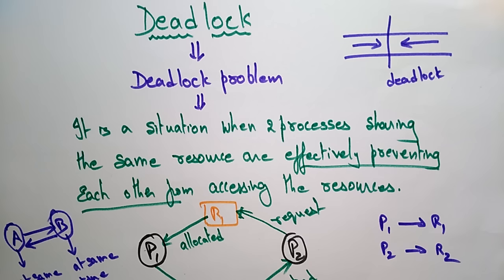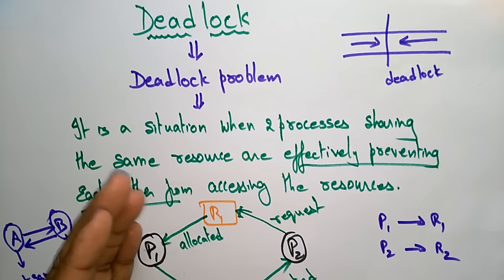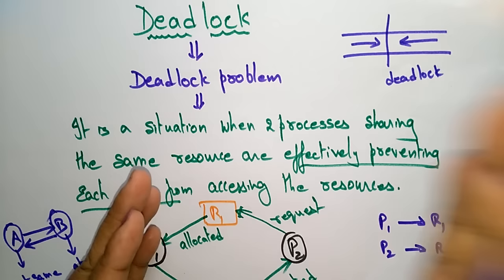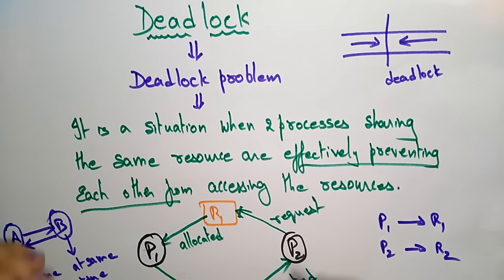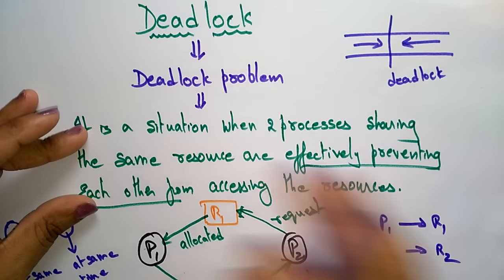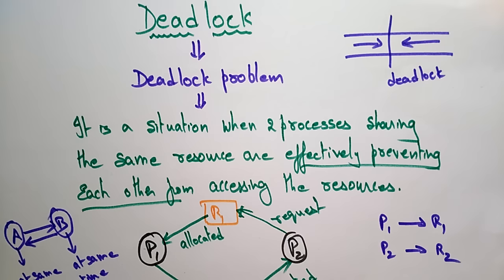A deadlock means one process is requesting resources that are already allocated to another process. That is called a deadlock state. Until that process releases the resource, the other process has to wait. But that process is not ready to release. So both are in a waiting state — that is a deadlock state.